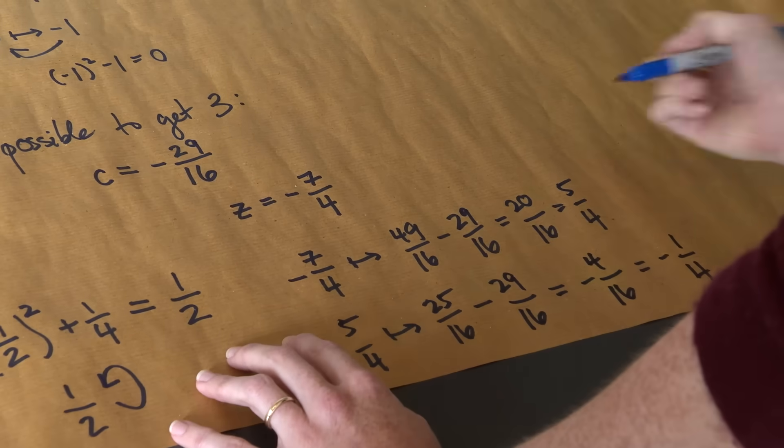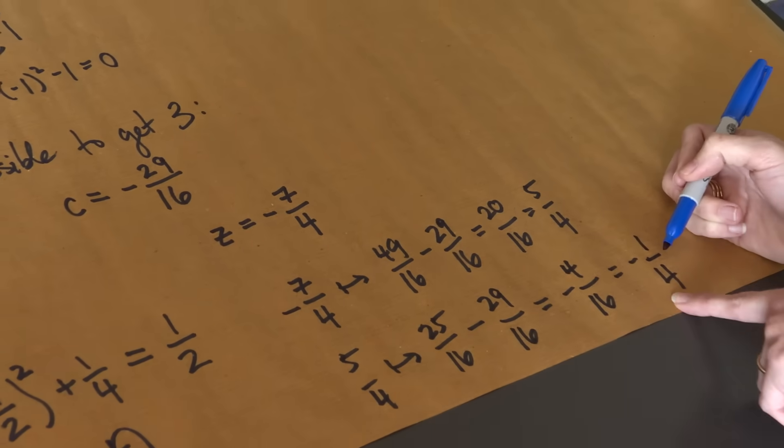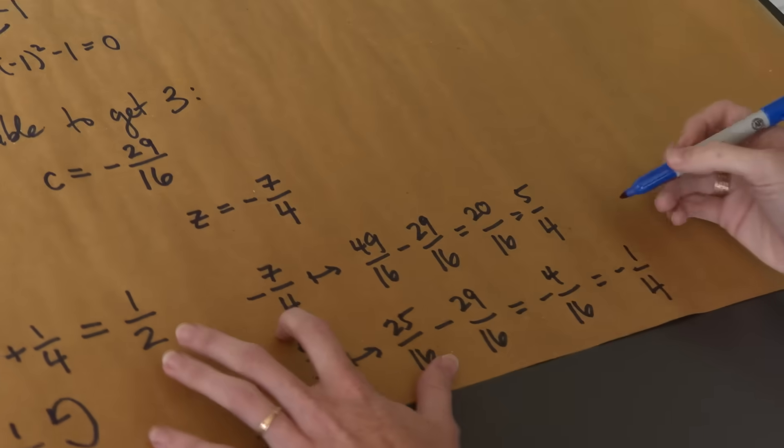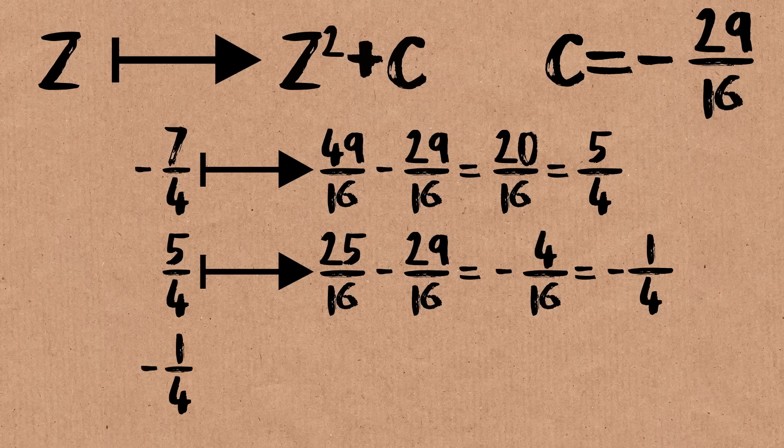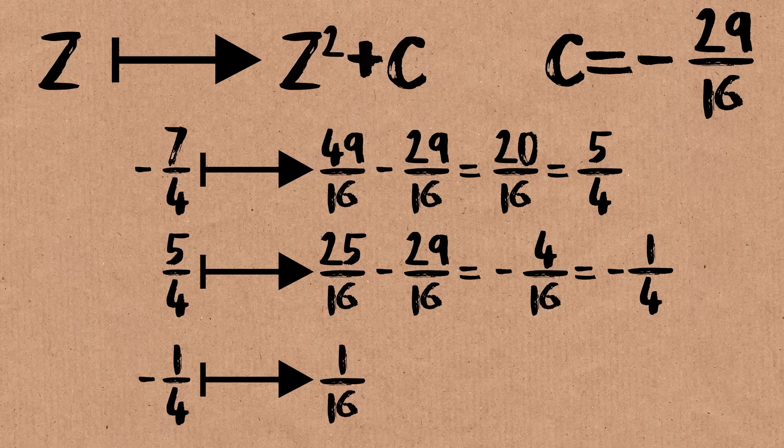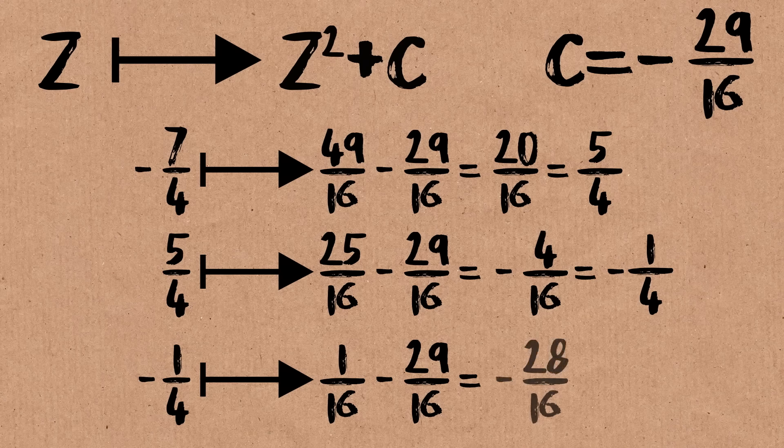And if I remembered the values correctly, when we do this to minus 1 quarter, we should end up back where we started. So if I take minus 1 quarter and I square it, I get 1 over 16. And then I subtract 29 over 16. What I end up with is minus 28 over 16, which,